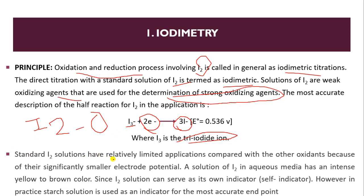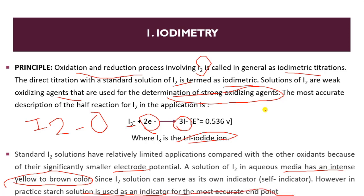Standard iodine solutions have relatively limited applications compared with other oxidants because they have a smaller electrode potential. A solution of iodine in aqueous media has an intense yellow or brown color. Iodine can serve as its own indicator — a self-indicator. However, for a more accurate endpoint, starch solution is used as an indicator when titrating with iodine.